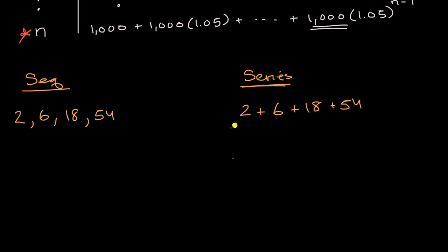Or we could even write it, and this will look similar to what we had just done with our little savings example, is this is 2 plus 2 times 3, plus 2 times 3 squared, plus 2 times 3 to the third power.